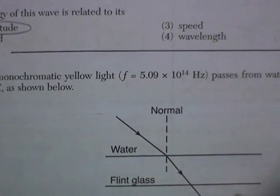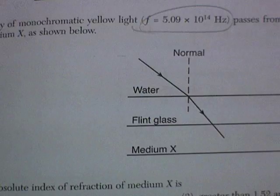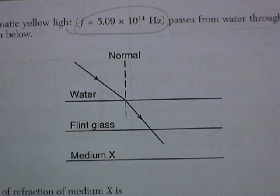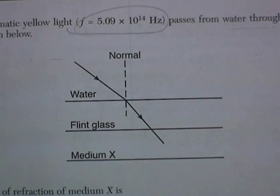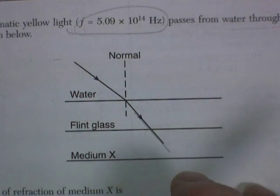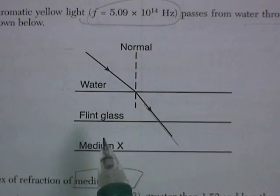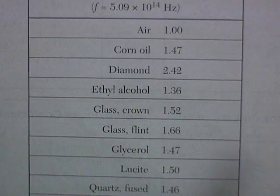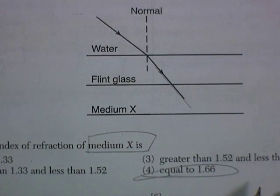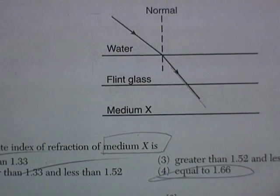A ray of monochromatic yellow light of this frequency, passing from water through flint glass into medium X as shown below. So, it's going from water into flint glass. And let me check with my ruler. That thing ain't bending. It goes into there. It's gone straight. So, here's how you solve the problem. The absolute index of refraction of medium X, and it's going to be the same as flint glass. So, let's look that up. And flint glass, 1.66, equal to 1.66. It's 1.66.